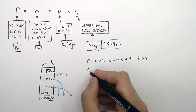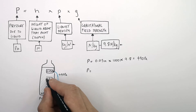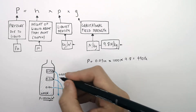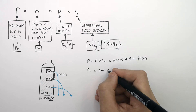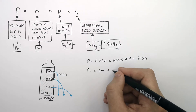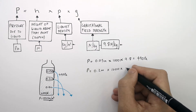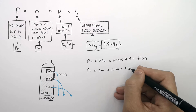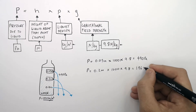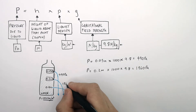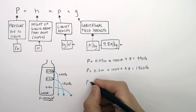The pressure due to the liquid at the second hole at 0.2 metres: P equals 0.2 metres times by 1000 times by 9.8, which equals 1960 Pascals.